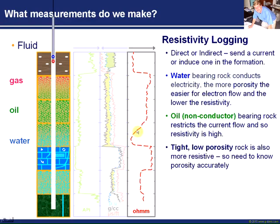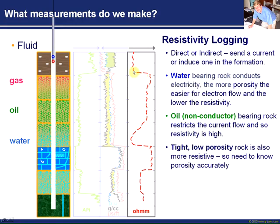As we come up into the oil leg, the resistivity gradually increases as we put more oil into the system. Now we have high resistivity, and we're interested in this because we know that the porosity is high as well - so this is looking good for hydrocarbons. Then as we go into the gas leg, we may see another increase in resistivity across the gas cap. Then as we come into the shale over the top - the mud rock - which contains a lot of water, oftentimes these are quite conductive, so the resistivity drops off again.